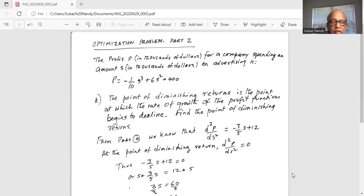At the point of diminishing return, the second derivative d²P/dS² equals zero. So -3/5 S + 12 = 0, or 3/5 S = 12.